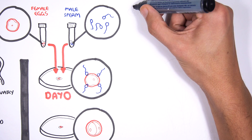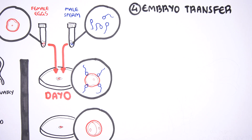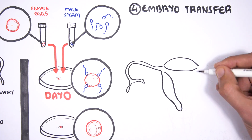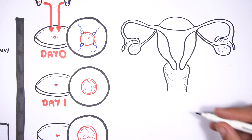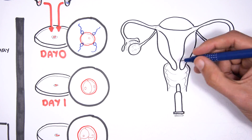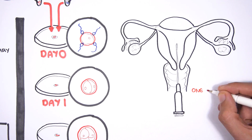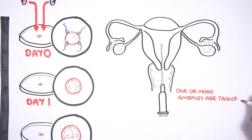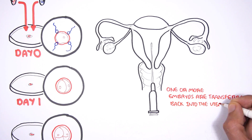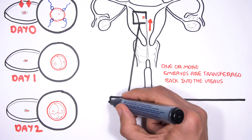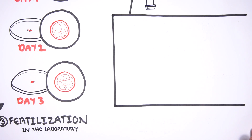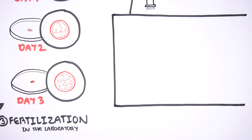This is step 4: embryo transfer. Here again we have the female uterus and its structures. During embryo transfer, one or more embryos are transferred back into the uterus about 3–5 days after the oocyte has been collected. Once transferred, the embryo can then implant into the inner lining of the uterus, called the endometrium.